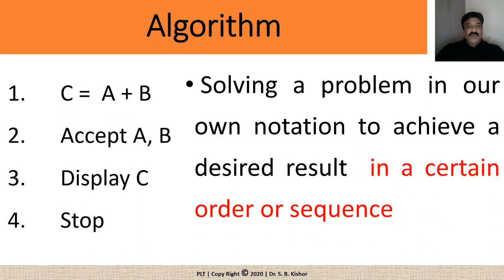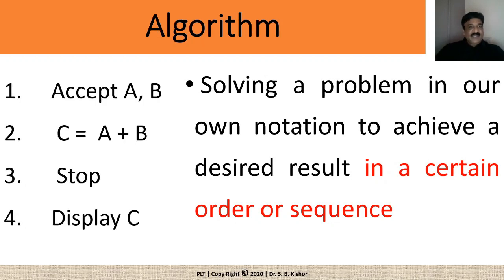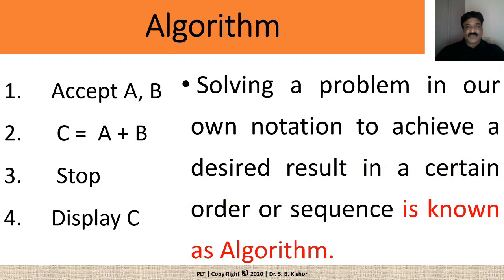Now, solving a problem in our own notation to achieve a desired result in a certain order or sequence. It means not only you should get the result but you should also make sure that the sequence of the order is correct. For example, in this case, what is happening without accepting the values of A and B, what you are doing? You are performing their addition which is wrong. It means, first of all, you need to make sure that you have accepted certain values then only you will be able to perform their addition. Then, similarly, in this case observe that the first step is correct, second step is also correct but in the third step what you have done, we have stopped the algorithm. It means, user will never come to know about the result of this addition of these two numbers. So, you need to make sure that the sequence of the step that you have written is correct. So, now finally, we will discuss what is algorithm. Solving a problem in our own notation to achieve a desired result in a certain order or sequence is known as algorithm.